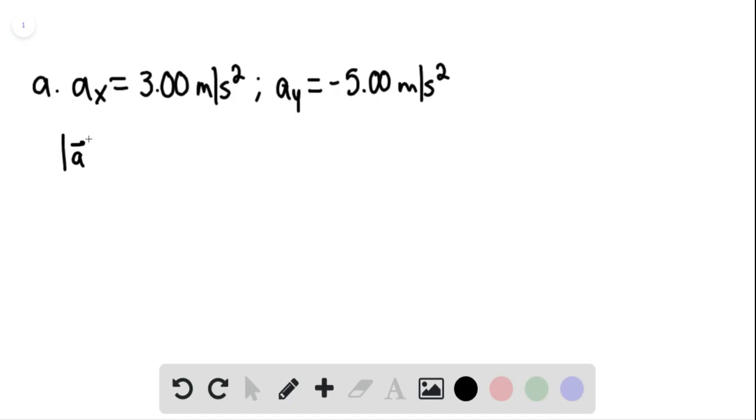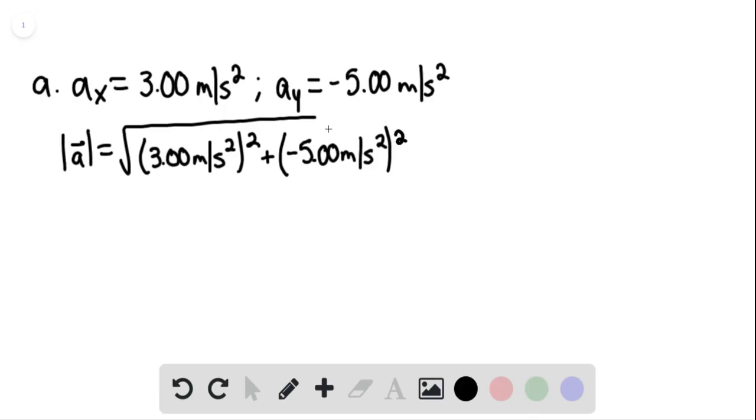We can find the magnitude of the acceleration. This equals the square root of (3.00 meters per second squared)² plus (-5.00 meters per second squared)². This gives us 5.83 meters per second squared.